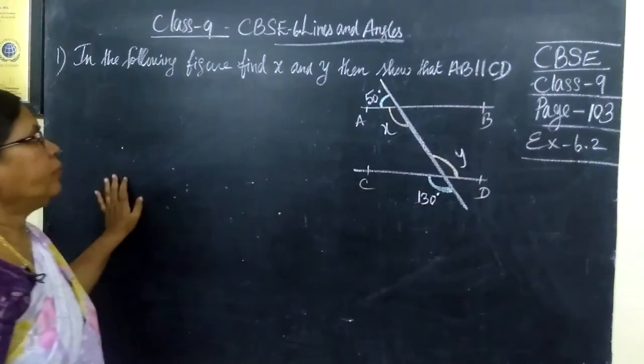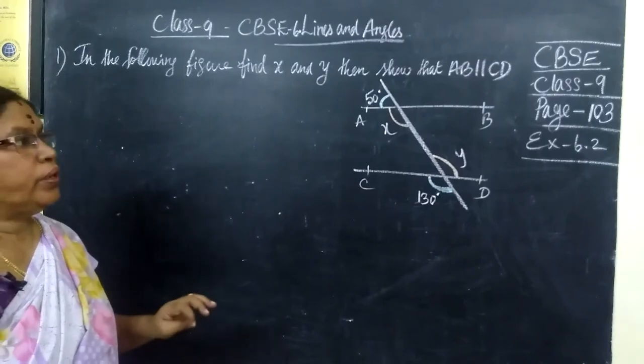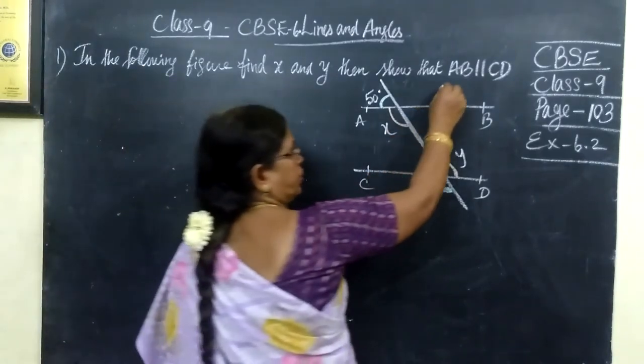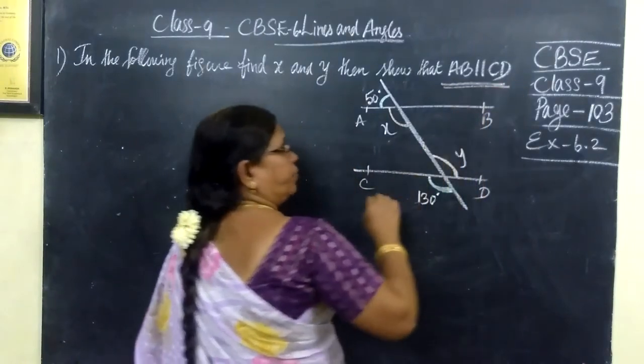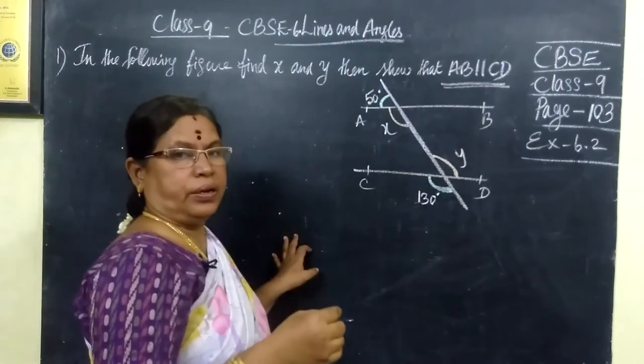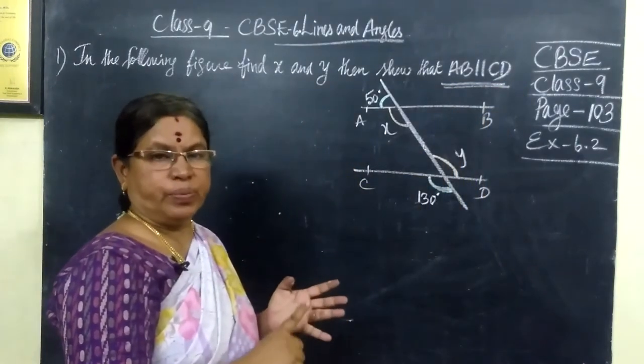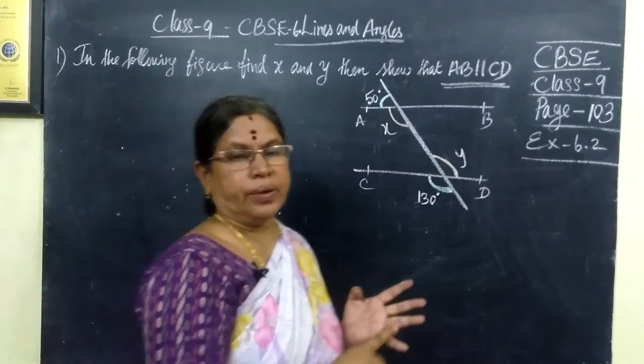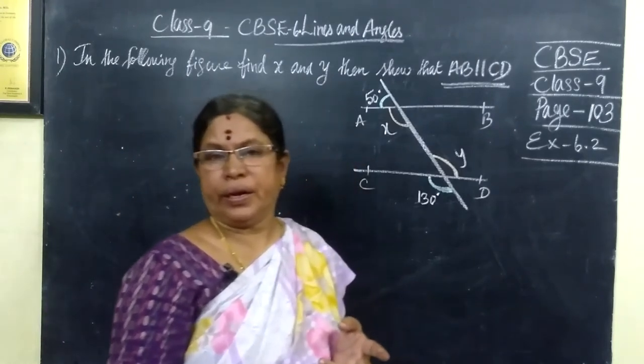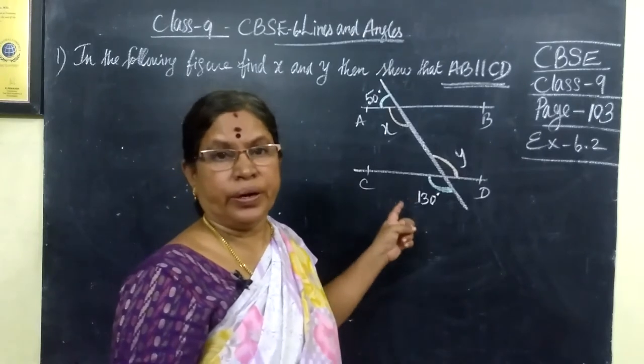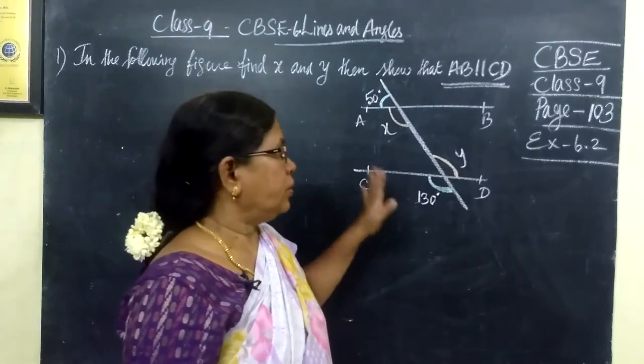In the following figure find X and Y, then show that AB parallel to CD. Most of the time AB parallel to CD and transversal will be given and we are finding the angles. That means corresponding angle, alternate angle, then co-interior angle that we find.